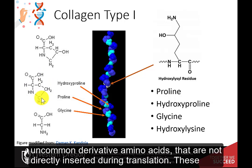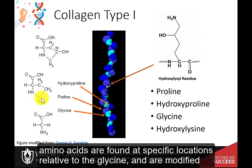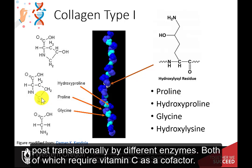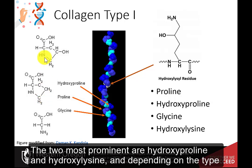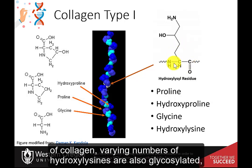Collagen also contains uncommon derivative amino acids that are not directly inserted during translation. These amino acids are found at specific locations relative to glycine and are modified post-translationally by different enzymes, both of which require vitamin C as a cofactor. The two most prominent are hydroxyproline and hydroxylysine, and depending on the type of collagen, varying numbers of hydroxylysines are also glycosylated, meaning sugar residues can be added onto these motifs as well.